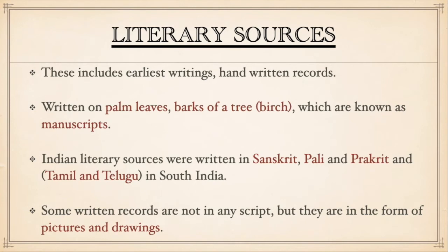Literary sources include earliest writings and handwritten records written on palm leaves or barks of a tree called birch, known as manuscripts. Indian literary sources were written in Sanskrit, Pali and Prakrit languages. In South India, sources are found in Tamil and Telugu languages. Some written records are not in any script but are in the form of pictures and drawings.